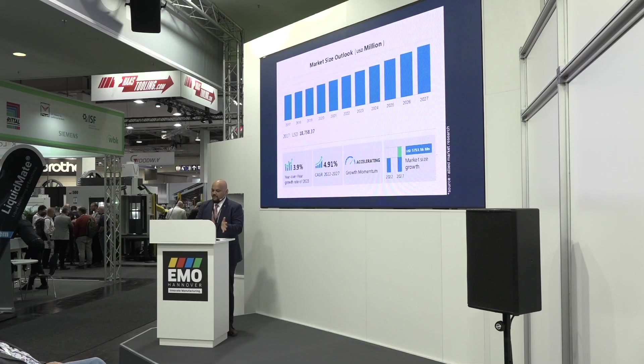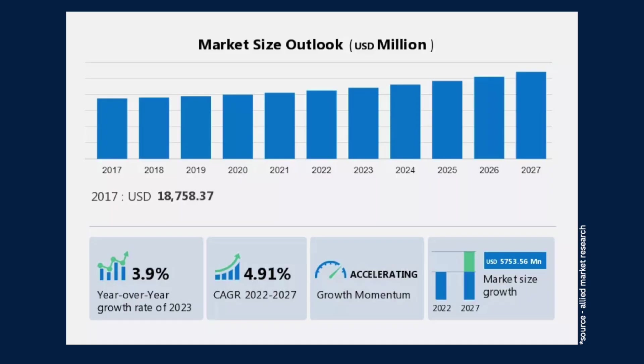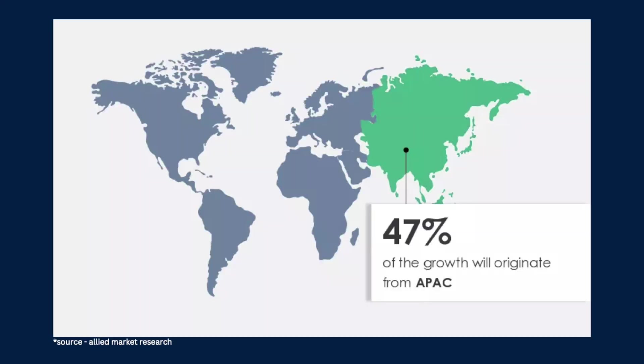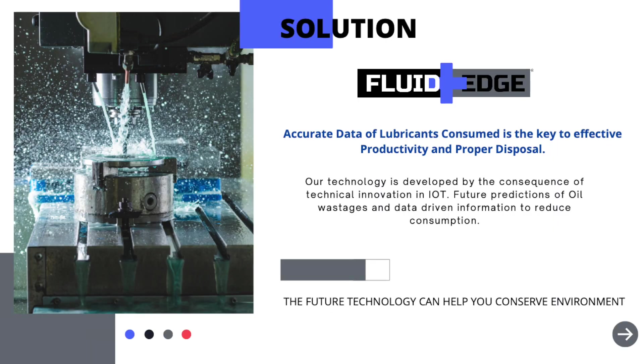This is the market size — if we don't take control of lubricants now, we probably won't reach sustainability in production. This is going to be the peak of consumption, and most of the consumption is going to come from the APAC region — Asia Pacific. So the solution is Fluid Edge: accurate data of lubricants consumed is the key to effective productivity and proper disposal.